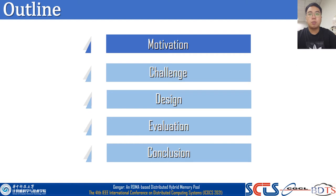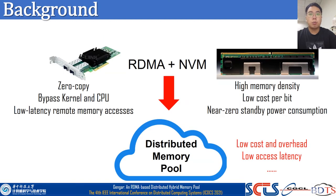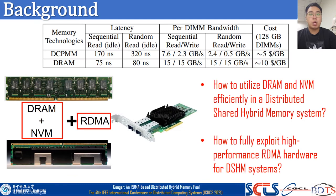Let's begin with the motivation. NVM promises high memory density, low cost per bit, and near-zero standby power consumption. RDMA technologies are able to provide low-latency remote memory accesses and have been widely utilized to improve networking performance in HPC. NVM and RDMA offer the possibility to build distributed memory pooling systems. However, NVM has low performance compared with DRAM, and they are often utilized along with DRAM to form hybrid memory systems. There have been relatively few studies on how to utilize DRAM and NVM efficiently in distributed shared hybrid memory systems, and it is unclear how to fully exploit high-performance RDMA hardware for DSHM systems.